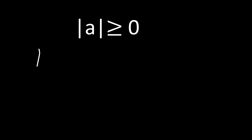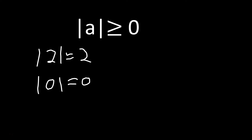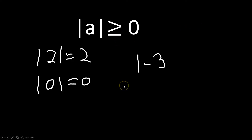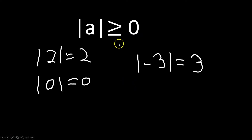Let's take a look at some properties of absolute value. First one: absolute value of something is always greater than or equal to 0. Examples: absolute value of 2 is just 2, because 2 is greater than or equal to 0. Absolute value of 0 is 0, because 0 is greater than or equal to 0 — specifically the equal to part. Absolute value of negative 3 is equal to positive 3, because 3 is greater than or equal to 0.